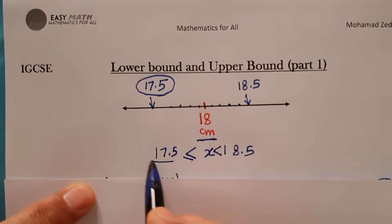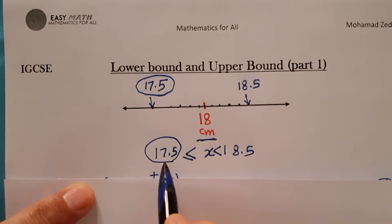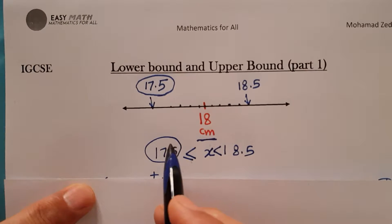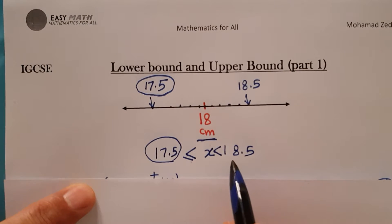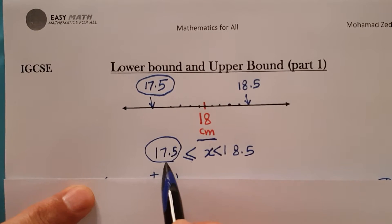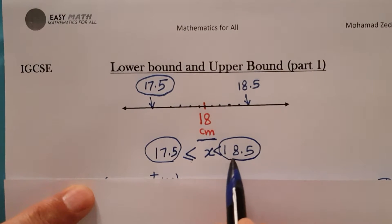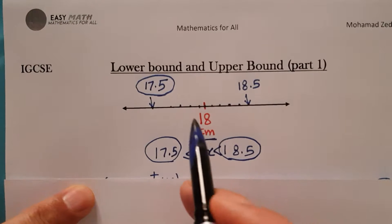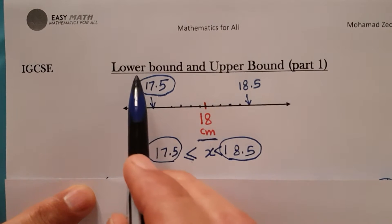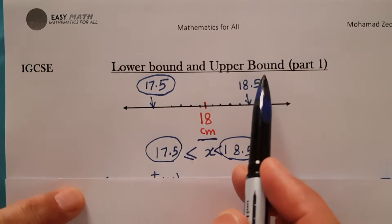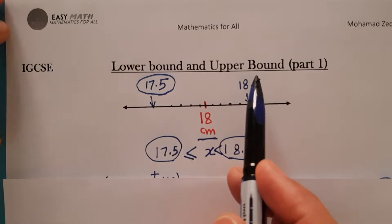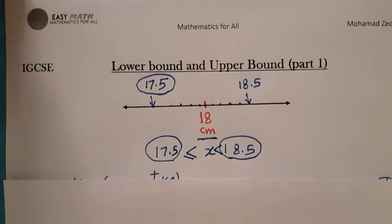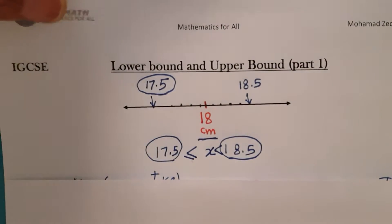17.5 is called the lower bound — the minimum number that rounds to give 18. And 18.5 is called the upper bound. Lower bound and upper bound. Our lesson today is about how to calculate the lower bound and upper bound for any amount you measure.